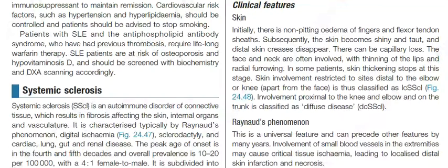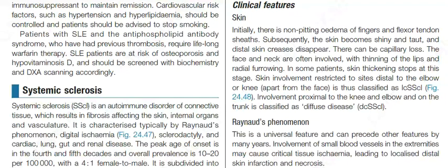Initially there is non-pitting edema of fingers and flexor tendon sheaths; subsequently the skin becomes shiny and taut, and distal skin creases disappear. There can be capillary loss. The face and neck are often involved with thinning of the lips and radial furrowing. In some patients, skin thickening stops at this stage. Skin involvement restricted to sites distal to the elbow only, apart from the face, is classified as limited cutaneous systemic sclerosis.